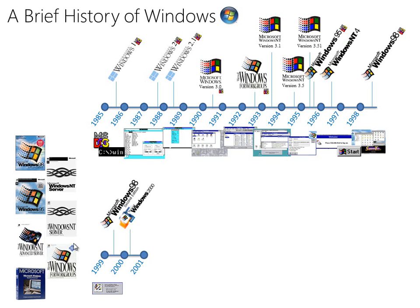Windows ME is the last version of Windows that actually runs on top of DOS, and it wasn't used a huge amount. Windows XP was released the following year and finally unified the home user and professional versions of Windows. It proved a very stable and user-friendly operating system, which is why it's still so heavily used today.